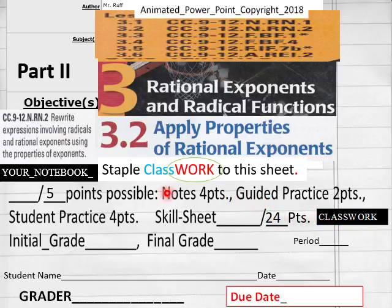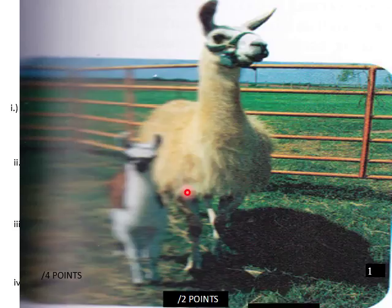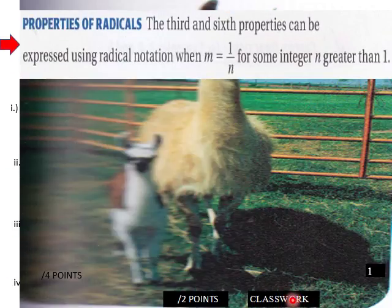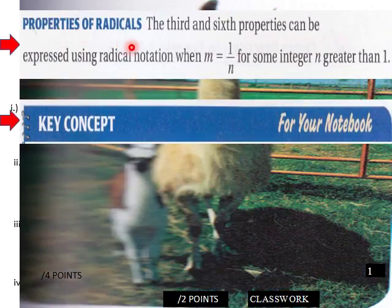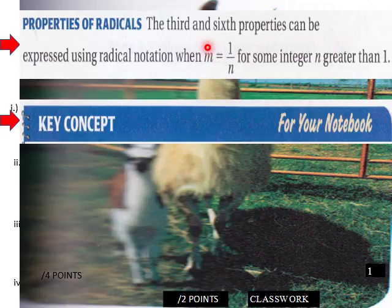If you don't have a classwork sheet you should email me. Page one of your classwork sheet, Properties of Radicals. The third and sixth properties can be expressed using radical notation when m equals one over n for some integer n greater than one.